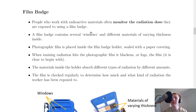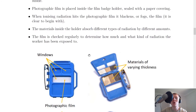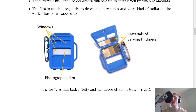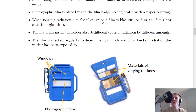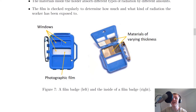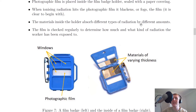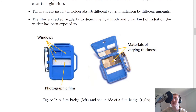Next we have the film badge. People who work with radioactive materials often monitor their radiation dose using a film badge. It contains several windows and different materials of varying thickness inside. Photographic film is placed inside the badge holder and sealed with a paper covering. When ionizing radiation hits the photographic film, it blackens or fogs the film, which is clear to begin with. The materials inside absorb different types of radiation by different amounts.